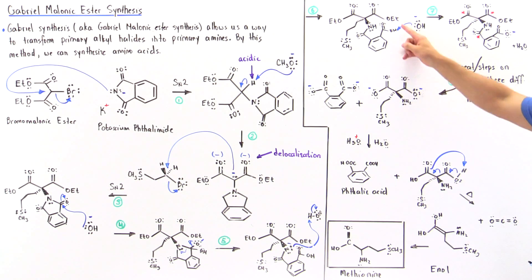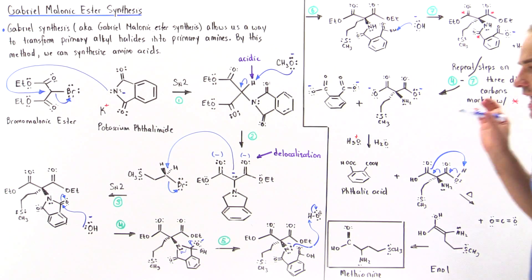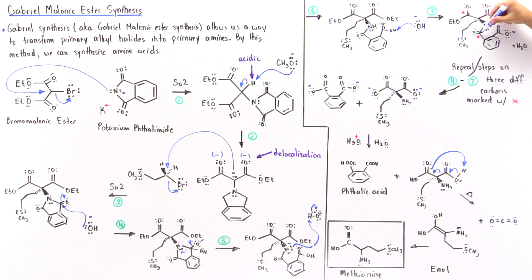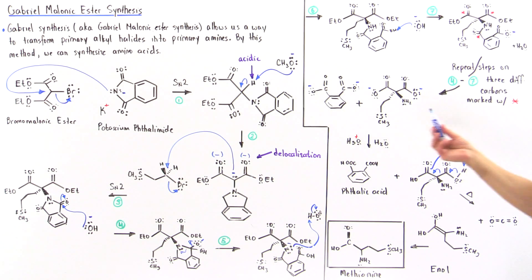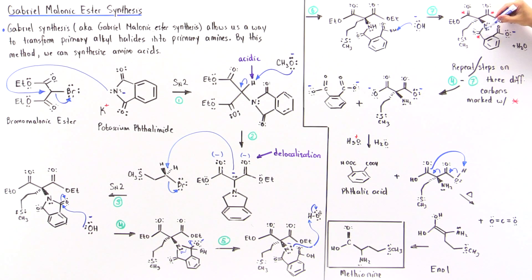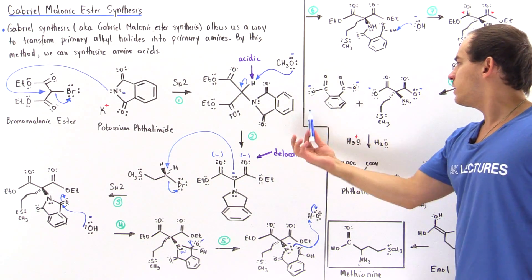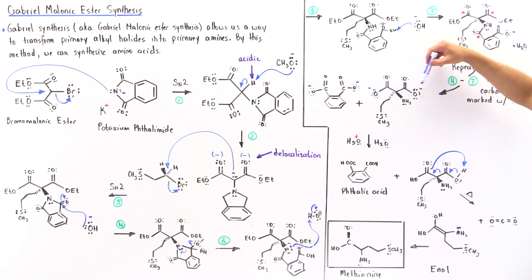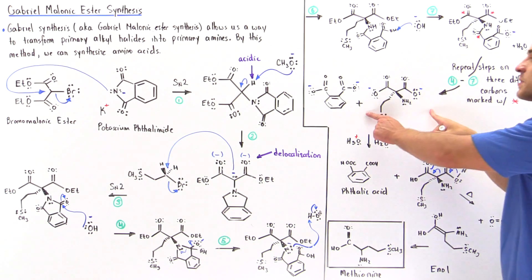The hydroxide then deprotonates this hydrogen and we form the carboxylate ion. If we repeat steps four through seven with the other carbon group on this side, when hydroxide attacks this carbon and the pi bond reforms, this bond breaks off and we form this molecule. Eventually, if hydroxide also attacks the remaining carbons, the ethyl groups are kicked off and we form this molecule. We then deprotonate the hydrogens on these two oxygens and form this intermediate.